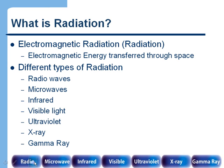It turns out that there are a number of different types of electromagnetic radiation. There are radio waves, microwaves, infrared, visible light, ultraviolet light, X-rays, and gamma rays.